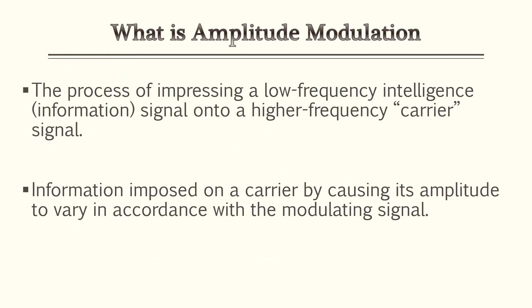For this lesson we'll be going over amplitude modulation, also known as AM. Let's go over the official definitions first. The process of impressing a low frequency intelligent information signal onto a higher frequency carrier signal. The other definition is information imposed on a carrier by causing its amplitude to vary in accordance with a modulating signal. So far you're probably completely confused — let's go to the next slide and see if we can clear a few things up.